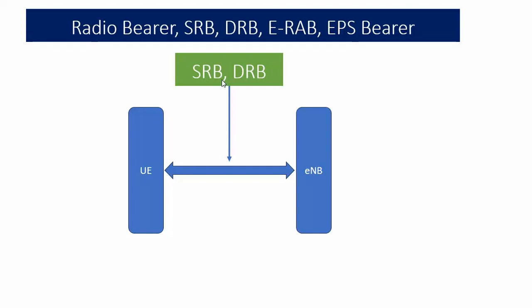After the signaling radio bearer is established, if we want to transfer user data, that time we use DRB — Data Radio Bearer. DRB is the connection established between the UE and eNodeB. I think you can understand what SRB and DRB are — they are the connection between UE and eNodeB.